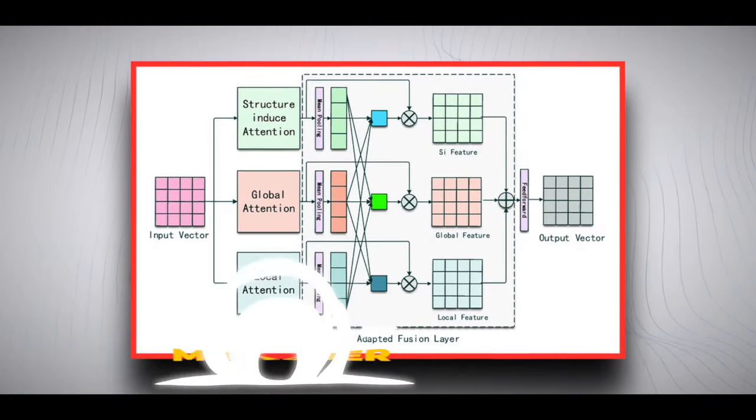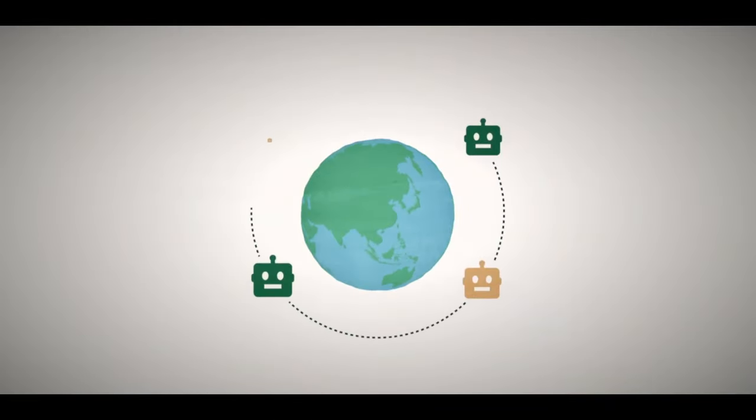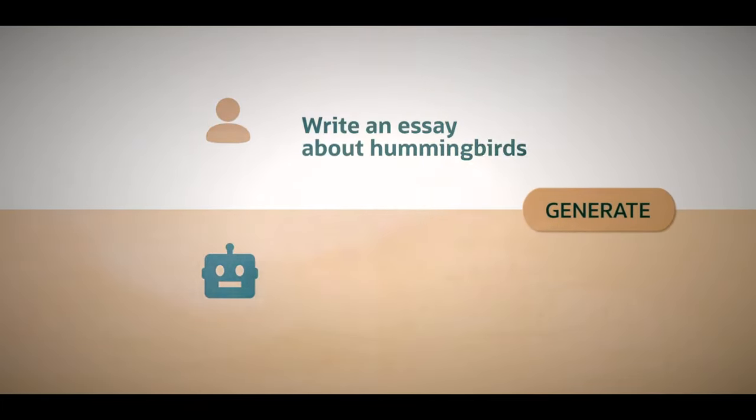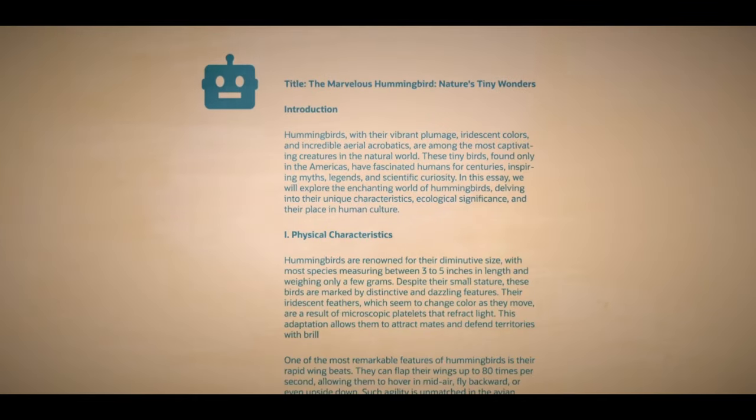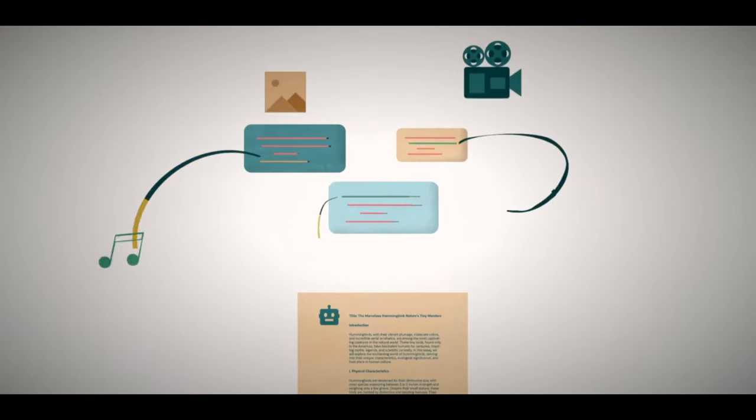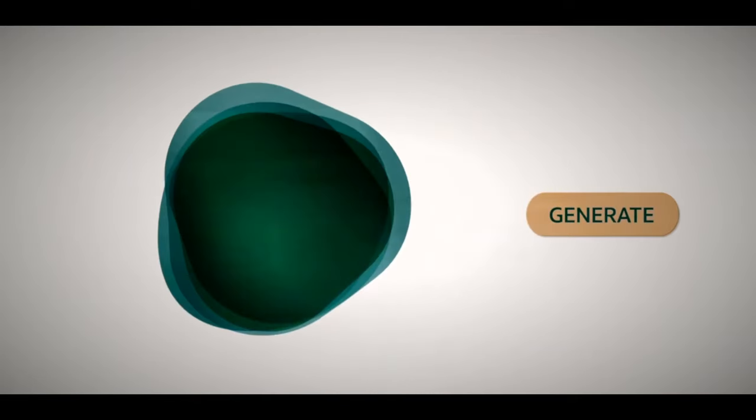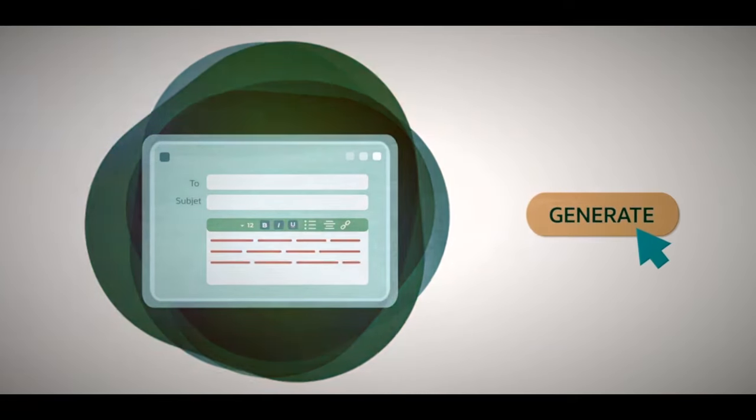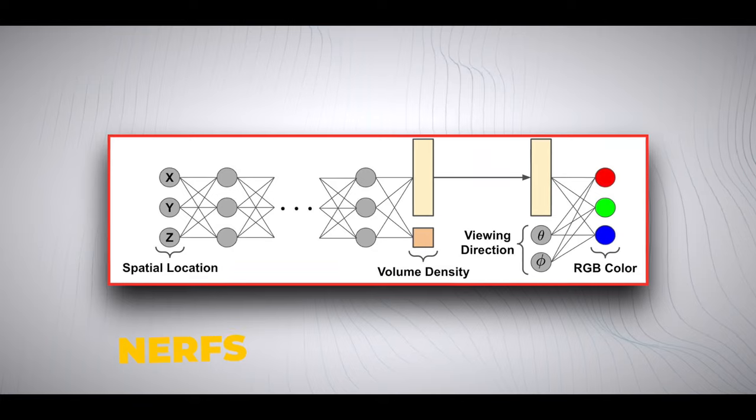So first off, there's something called a multi-view encoder. Imagine taking lots of pictures of an object from different angles, similar to if you were taking pictures of your favorite toy from all its sides. This special network takes all of these pictures and turns them into a secret code that holds all important information about the object. It's like a magic code that knows everything about the toy.